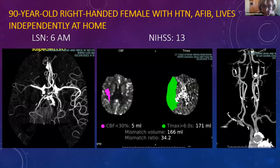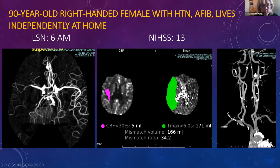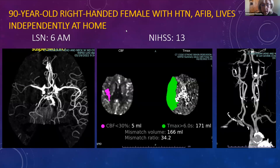This is a 90-year-old right-handed female who lives independently at home. She has AFib and is on Eliquis. Even though she was last seen normal about four hours from the time we got her on the table to imaging, she was not a candidate for IV thrombolytics because of her Eliquis. Her CTA beautifully shows a truncated middle cerebral artery. We use Rapid AI, an advanced platform that uses cerebral blood flow and Tmax to show us the infarcted core, which is pretty small in this case, but with a very large area of brain at risk. It also gives us a snapshot of the arch — she was a type II arch.